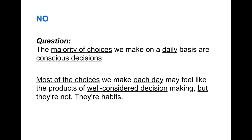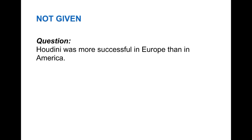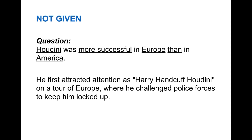It was just about finding the keywords and comparing the question with the passage. Finally, let's look at a Not-Given example. Here's the question: 'Houdini was more successful in Europe than in America.' We're searching for the name Houdini, and the comparison: more successful in Europe than in America. The strongest keyword is the name Houdini. In the passage: 'He first attracted attention as Harry Handcuff Houdini on a tour of Europe where he challenged police forces to keep him locked up.' We found something about Houdini and Europe, but nothing about America and no comparison about being more successful. So the answer is Not-Given.